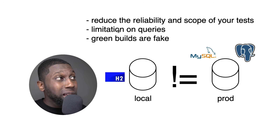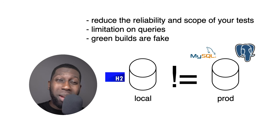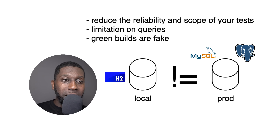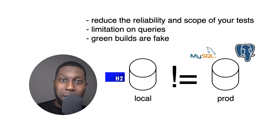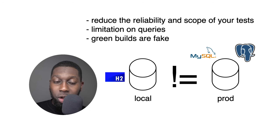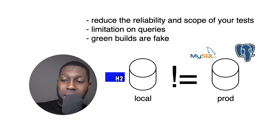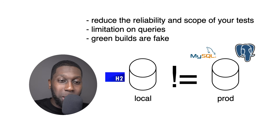Then you have another issue: limitation on queries. H2 and Postgres or MySQL are completely two separate databases. Not every single feature or query will work on H2. So for example, if you have a query which works completely fine with H2, but then you deploy and it doesn't work with Postgres — that's absolutely right, because they are completely two different databases.